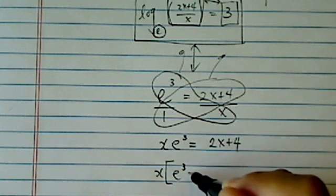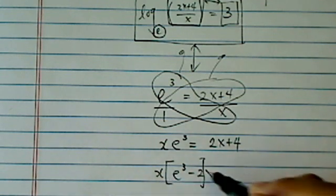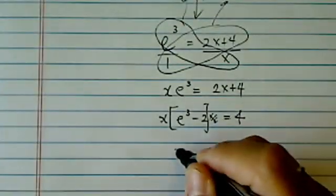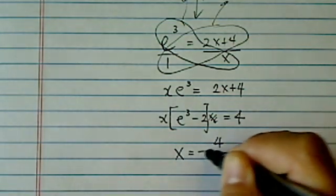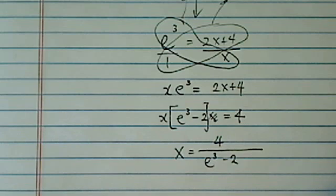Let's gather all the x terms, e to the 3 x minus 2, and there's an x term I pulled out, so there's not x here, is equal to 4. And then from here, all you do is isolate x by dividing the constant in front of it. So here's the answer.